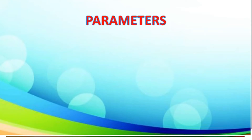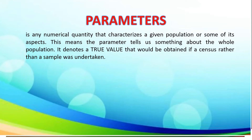To begin with, let us define first parameters. A parameter is any numerical quantity that characterizes a given population or some of its aspects. This means the parameter tells us something about the whole population. It denotes a true value that would be obtained if a census rather than a sample was undertaken.